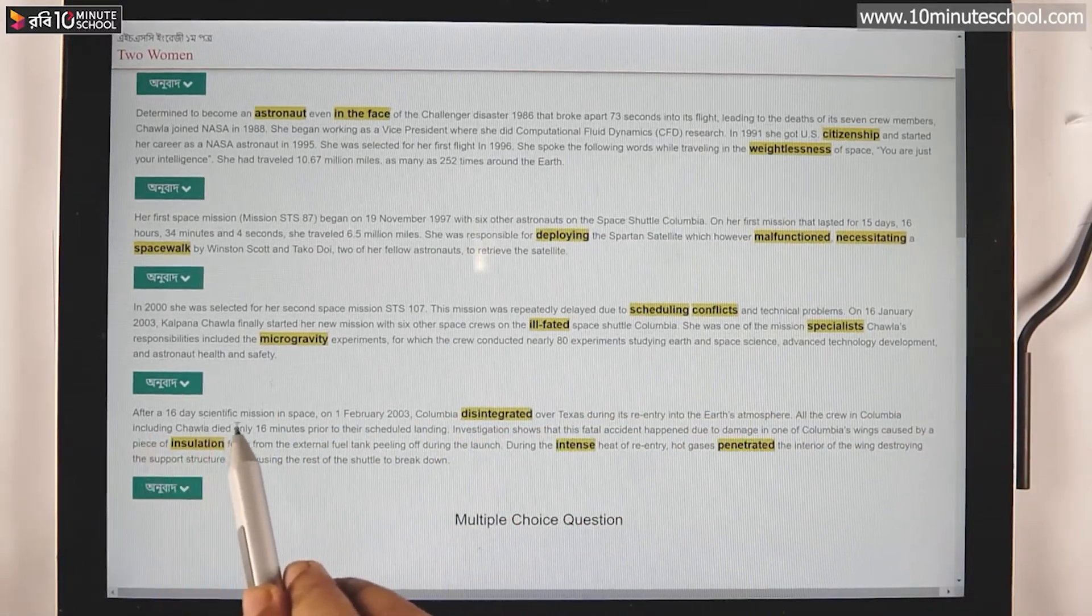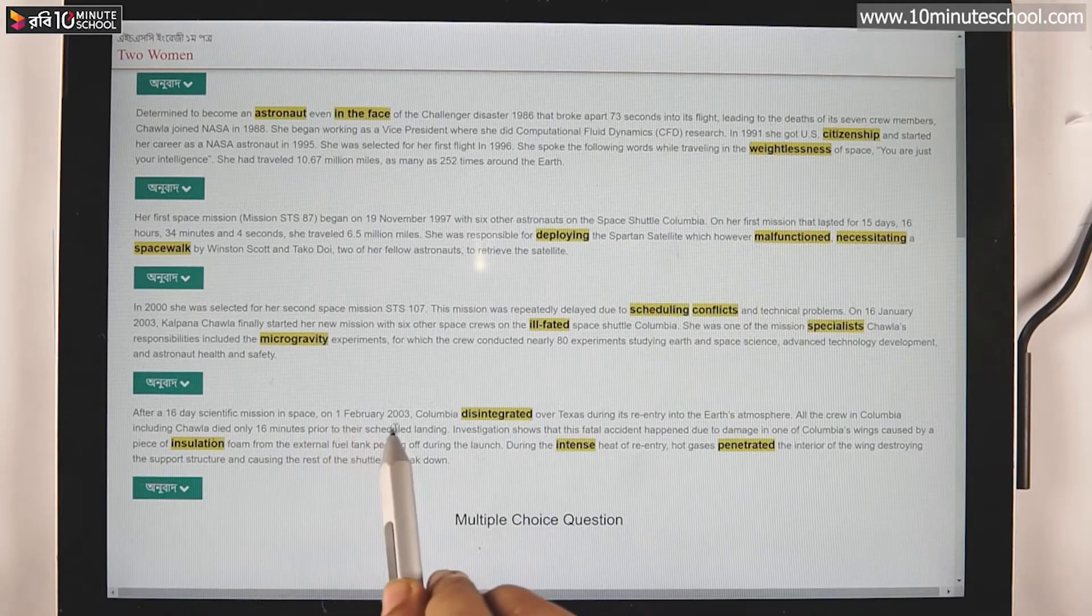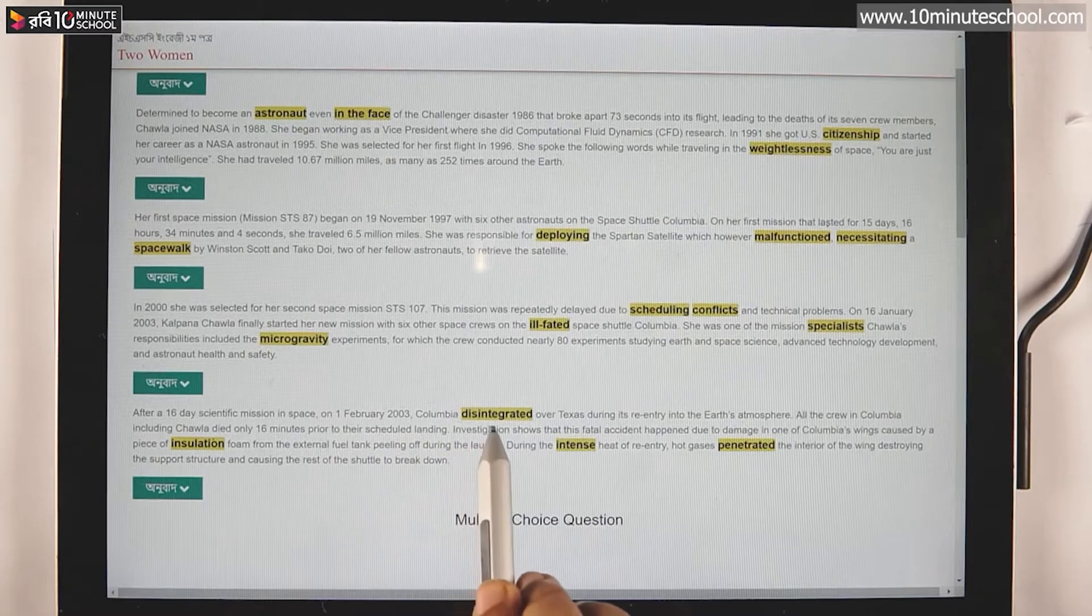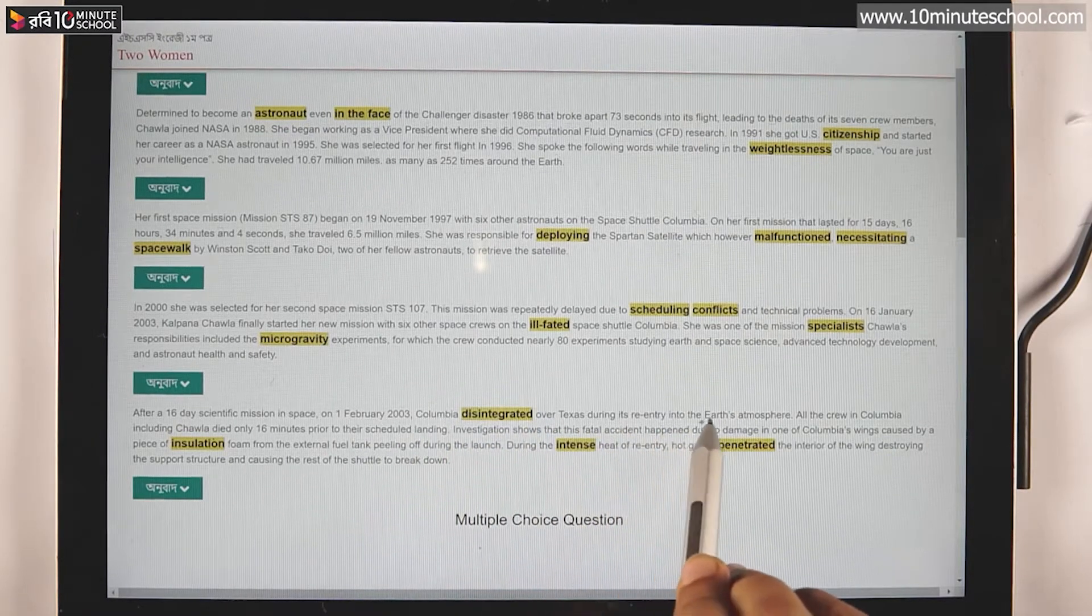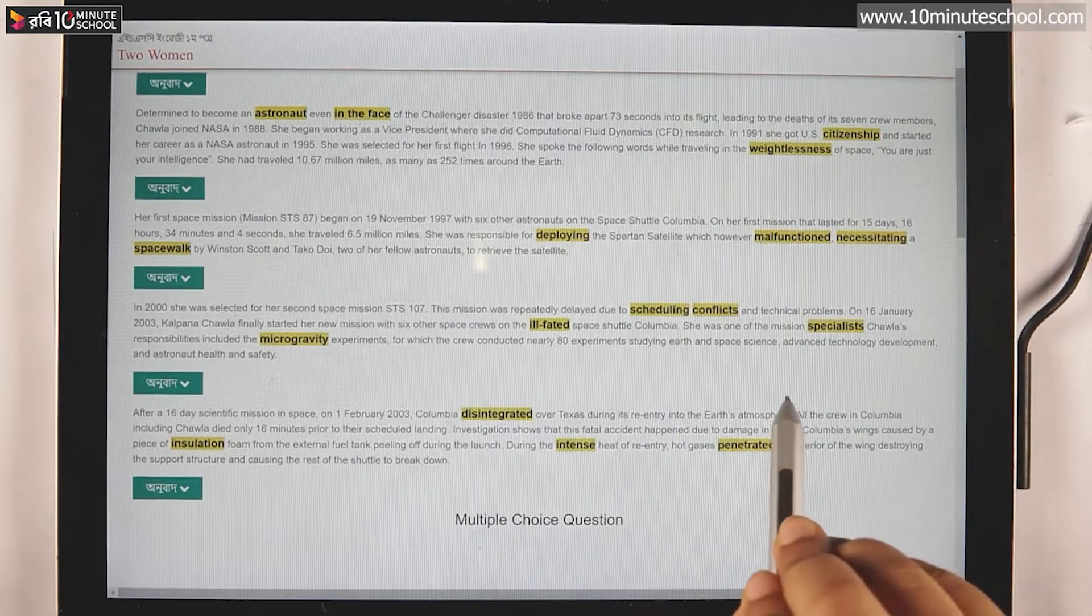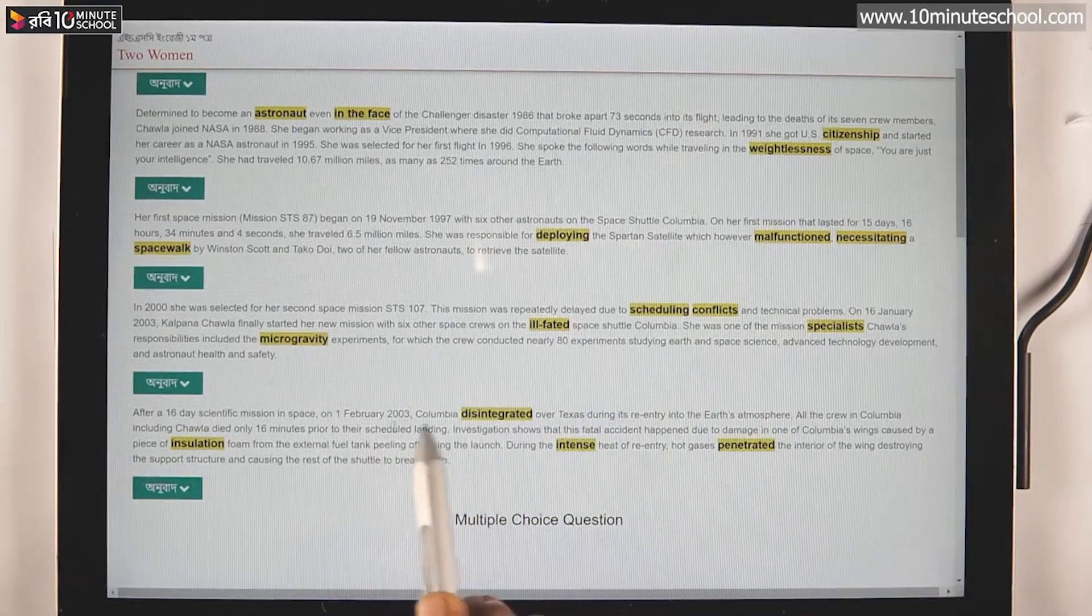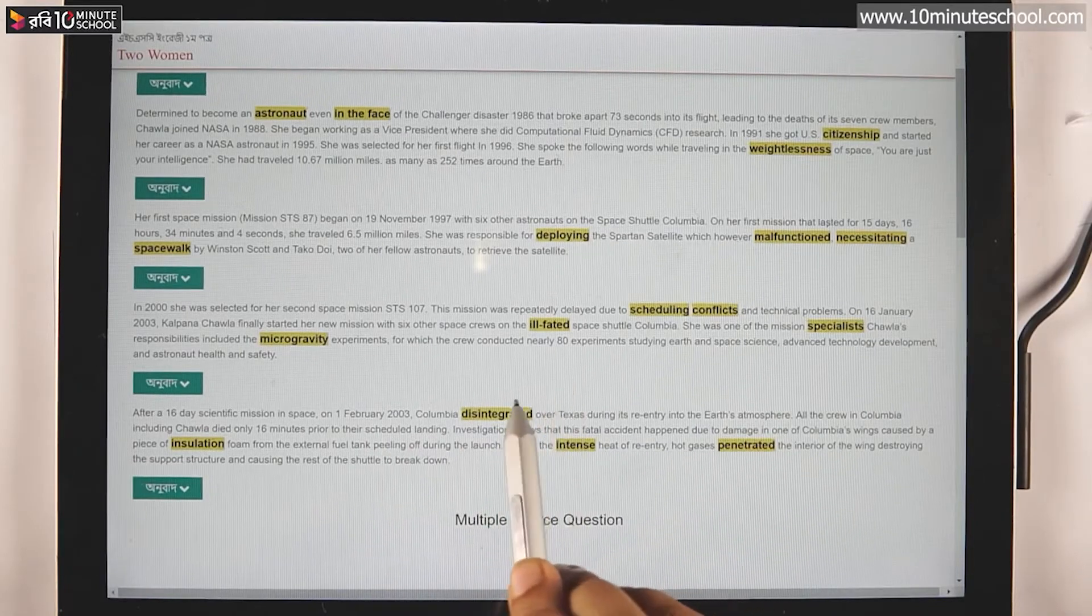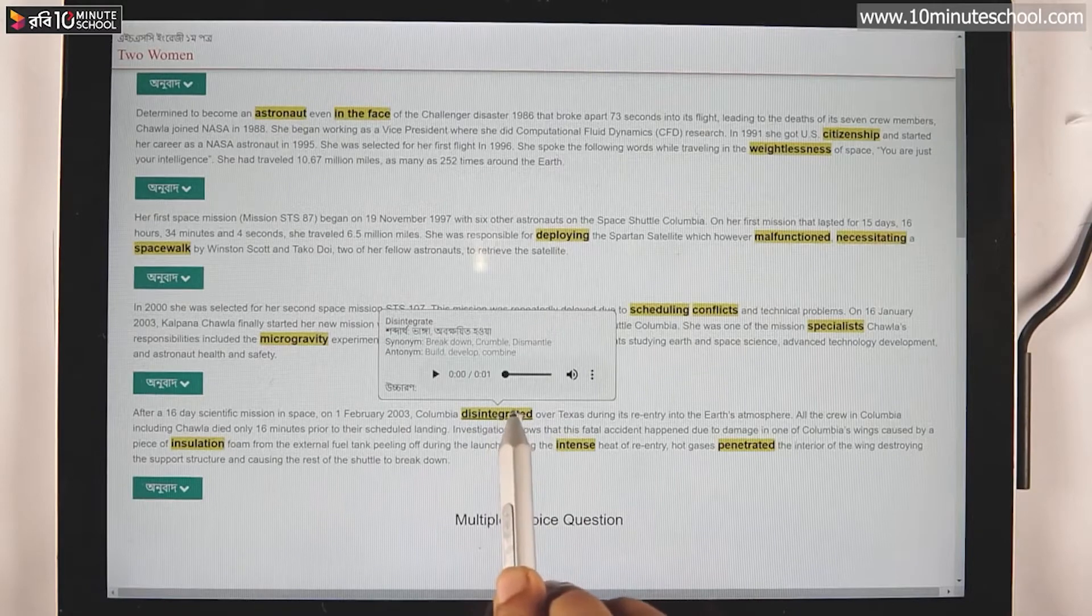After completing the scientific mission in space, on 1st February 2003, Columbia disintegrated over Texas during its re-entry into the Earth's atmosphere. They were disintegrated and this was a lot of work.